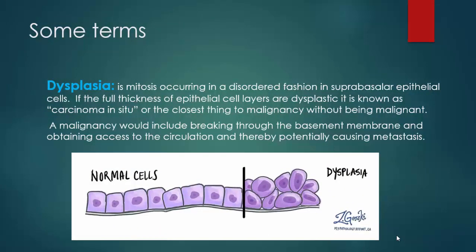Some scientific terms which are important to understand our topic. The first is dysplasia — mitosis occurring in a disordered fashion in supra-basal epithelial cells. Full thickness involvement of the cell layer by dysplastic cells is known as carcinoma in situ. In this photo we can notice that the cells are arranged in a normal pattern, while here the cells show mitosis with disordered fashion, which is called dysplasia. If the full thickness of the epithelium is involved by these dysplastic cells, it is called carcinoma in situ. And if these cells cause breaking of the epithelial basement membrane, they cause malignancy and then metastasis.